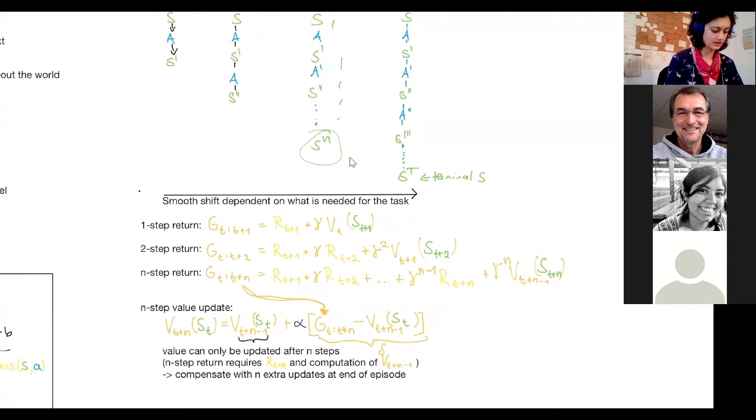And why is n the answer? So the value can only be computed after n steps, because we need the reward at step t plus n and computation of the value for the t plus n state. And to compensate for that, we perform n extra updates after the end of the episode. So to be able to update this state, we need to be able to calculate the n-step return. And for the n-step return, we need all the rewards that were received up until the state s_n. So we need until reward t plus n. That's why we need to take all these steps first before we can update the state. And then after termination, we add n steps to compensate.